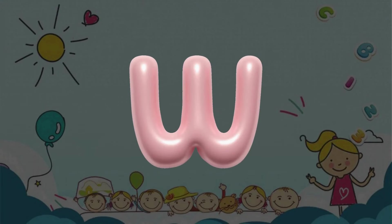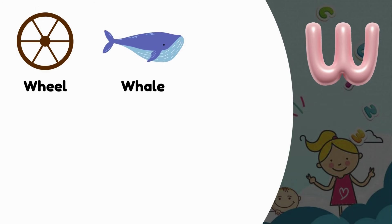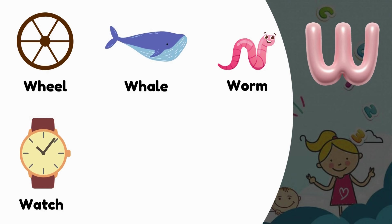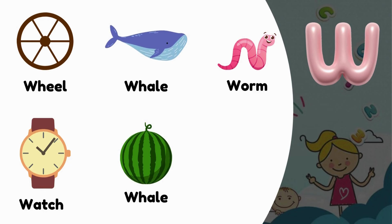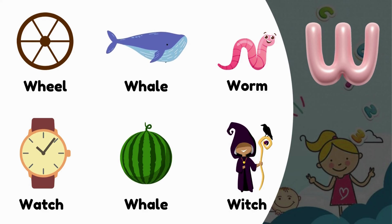W. W is for Wheel. W is for Whale. W is for Worm. W is for Watch. W is for Watermelon. W is for Witch.